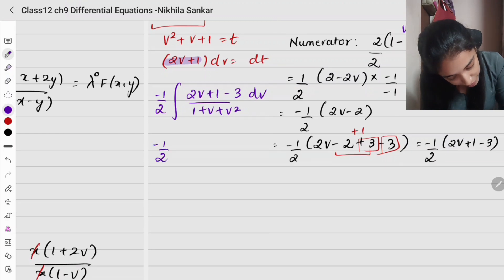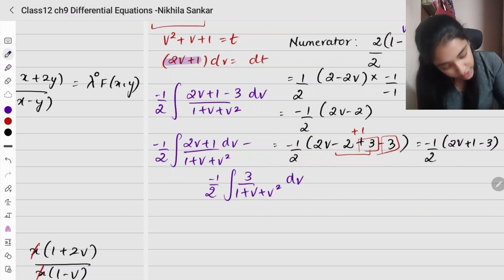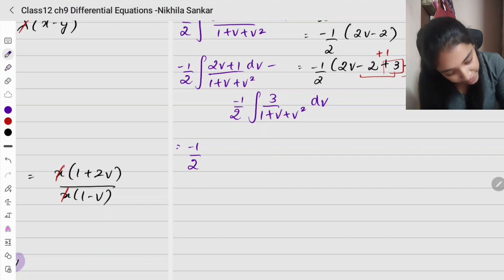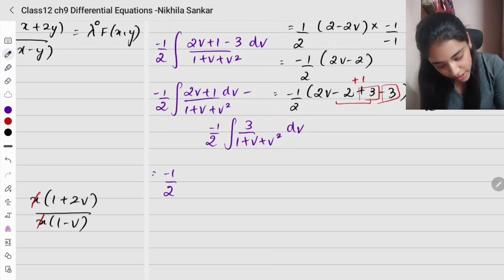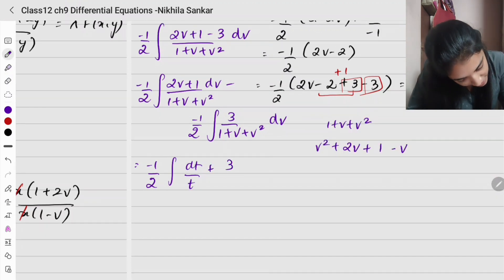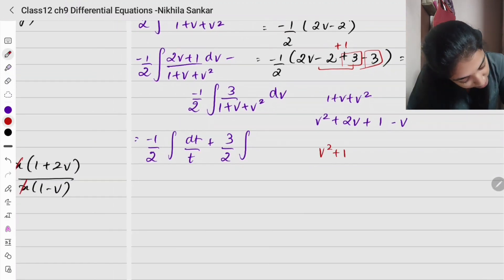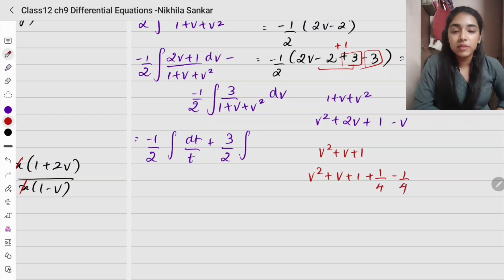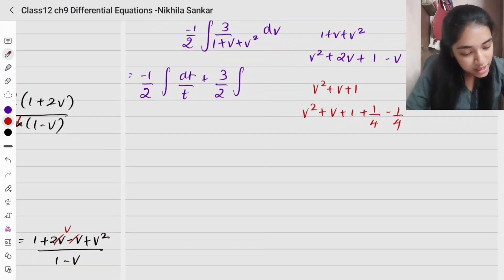For the first integral, using substitution t = v² + v + 1, dt = (2v+1)dv, we get (-1/2)∫dt/t = (-1/2)log(t). For the second integral, we complete the square: v² + v + 1 = (v + 1/2)² + 3/4 = (v + 1/2)² + (√3/2)². Using the formula ∫1/(x²+a²)dx = (1/a)tan⁻¹(x/a), we can integrate.